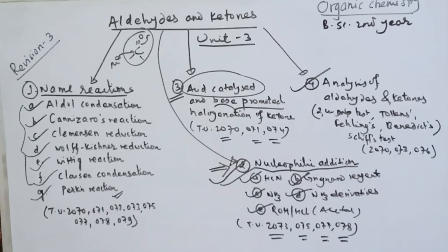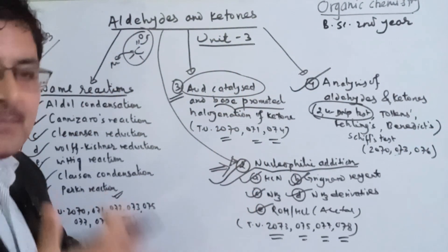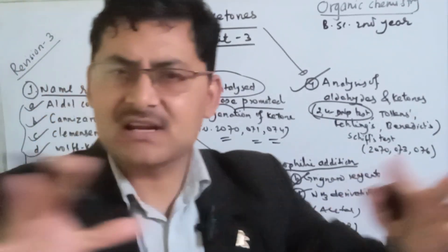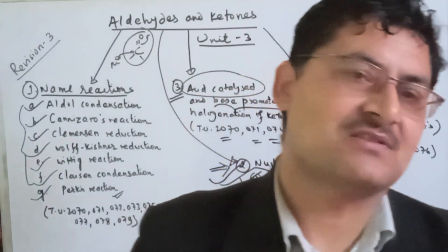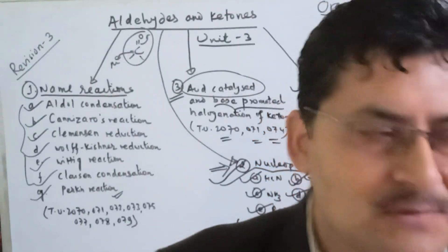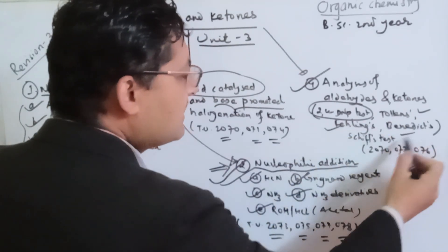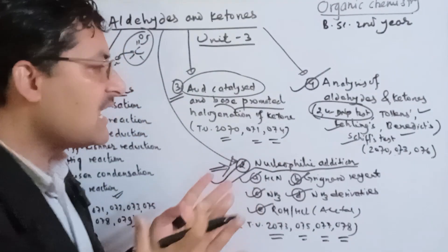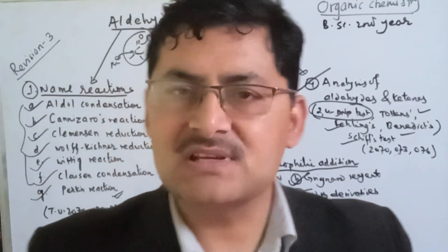We can revise this process. There is a 2,4-DNP test for identifying carbonyl compounds. In all organic compounds, the 2,4-DNP test can be applied. What is the reaction? What is the mechanism? There are also different tests: the 2,4-DNP test, Tollens test, Fehling's test, Schiff's test. These are all the tests. What is the reaction of aldehyde? What is the product? There is also a mild oxidation reaction.